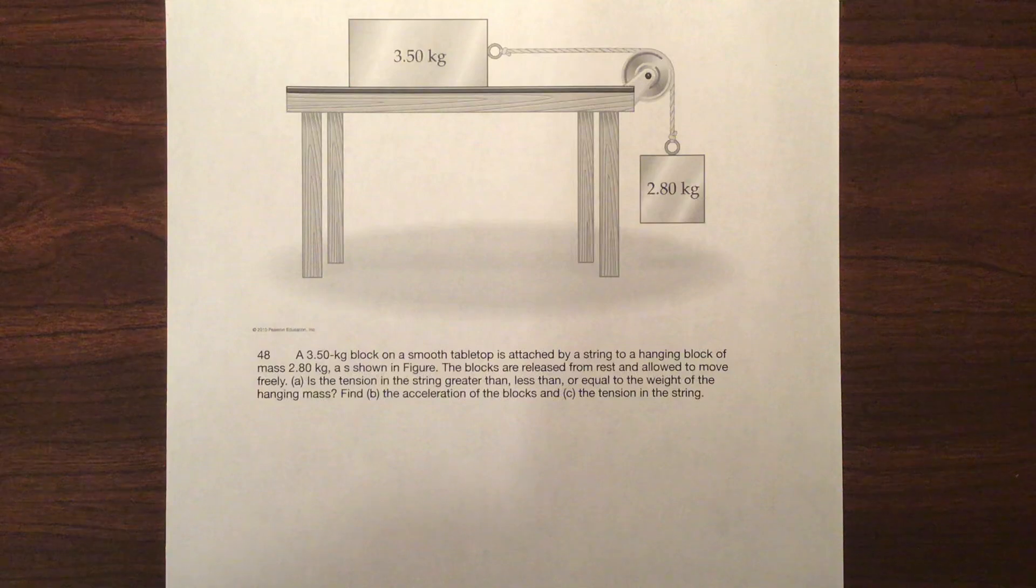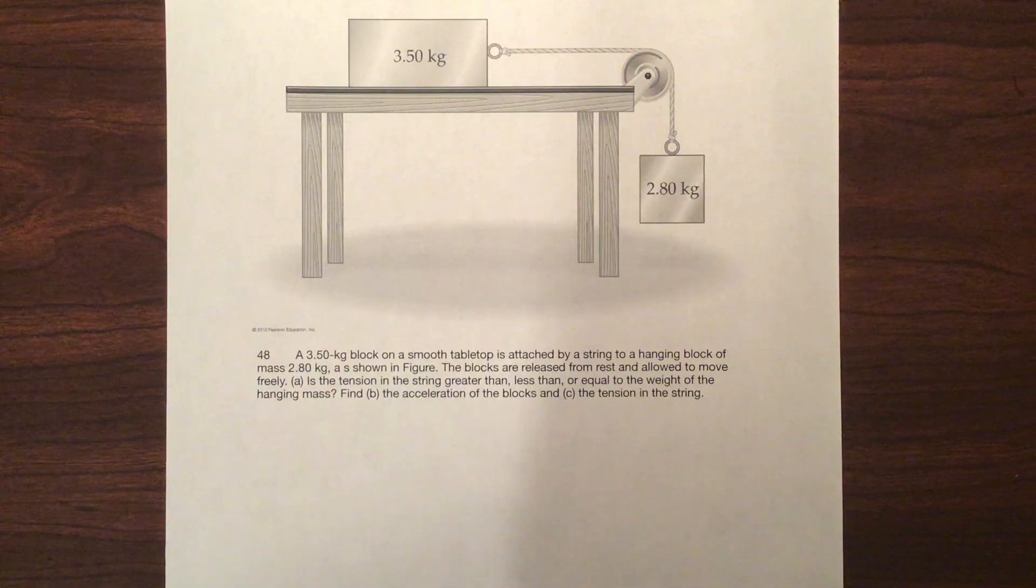So we've got a connected string problem here. A 3.5 kilogram block on a smooth tabletop is attached by a string to a hanging block of mass 2.8 kilograms as shown in the figure. The blocks are released from rest and allowed to move freely. Is the tension of the string greater than, less than, or equal to the weight of the hanging mass?